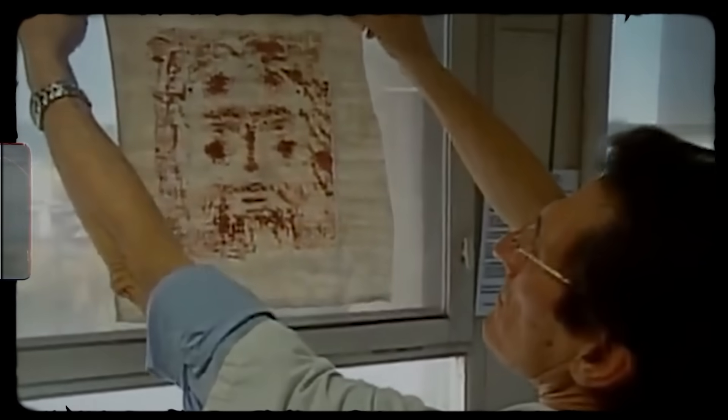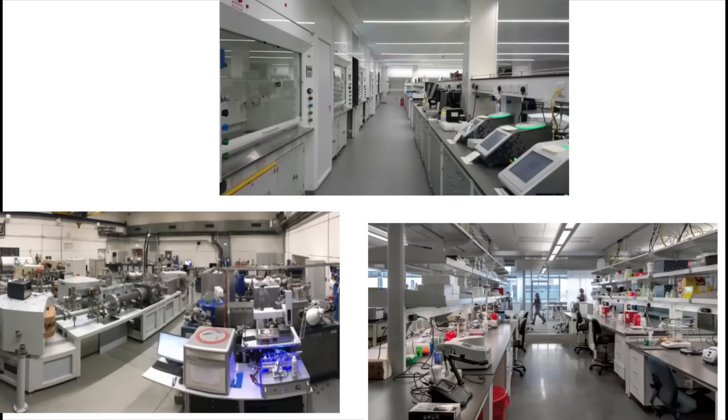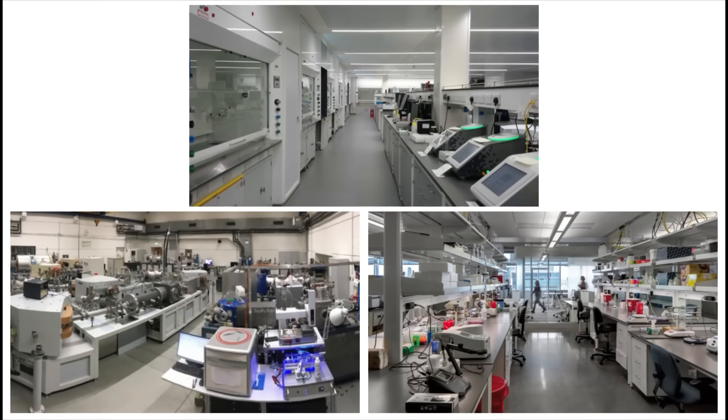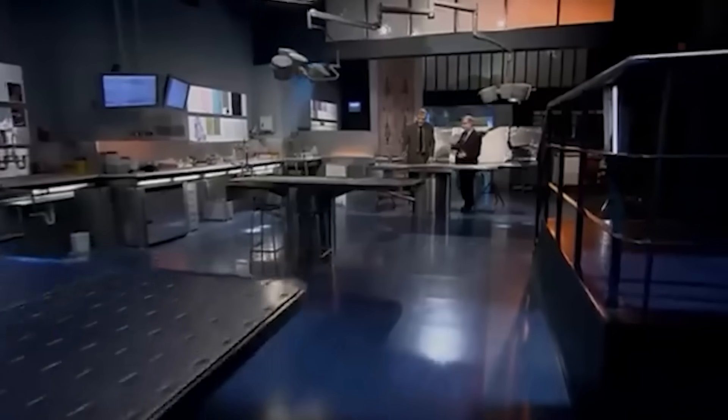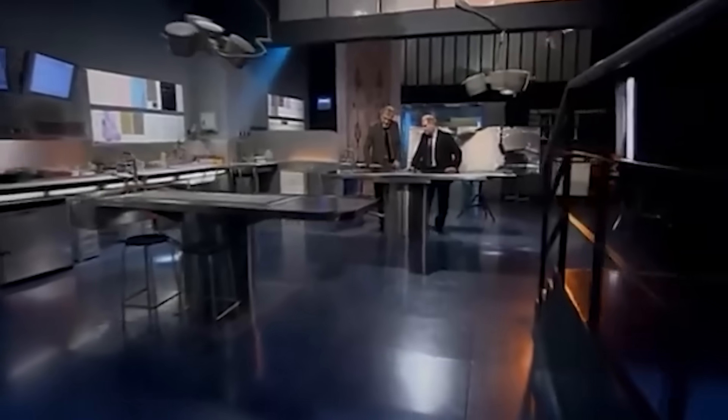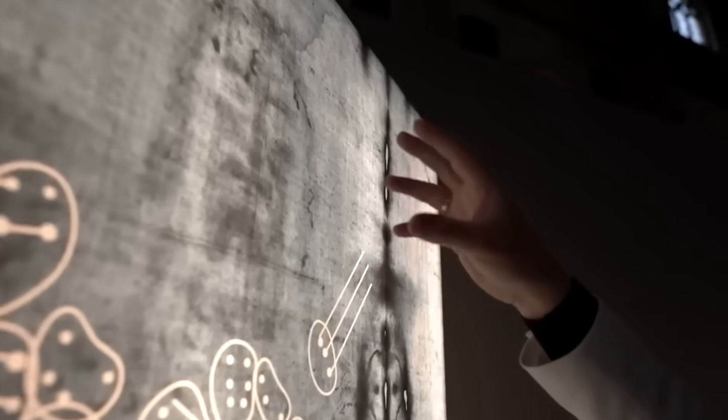In 1988, officials cut a small swatch from a single corner of the shroud. This sample was divided and sent to three of the world's top laboratories in Oxford, Zurich, and Arizona. The process, called accelerator mass spectrometry, is incredibly precise. It counts individual carbon-14 atoms to determine age.